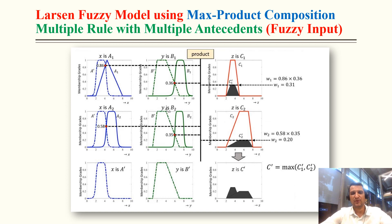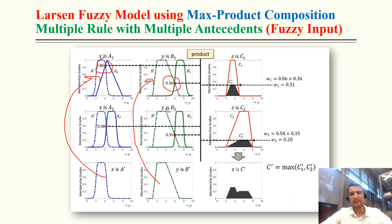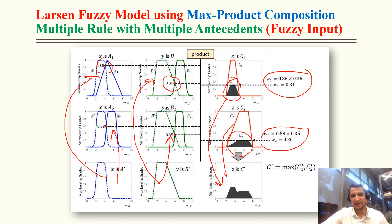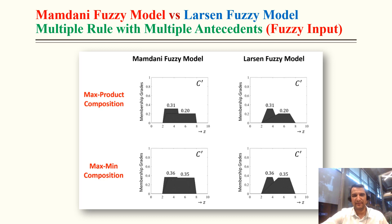For max-product with multiple rules and multiple antecedents: degrees of compatibility are 0.86 and 0.36, multiplied gives 0.31 for rule one. For rule two, values give 0.20 after multiplication. We then aggregate all individual rule fuzzy outputs into a single fuzzy output. This is the final difference between Mamdani and Larsen using max-product and max-mean composition.